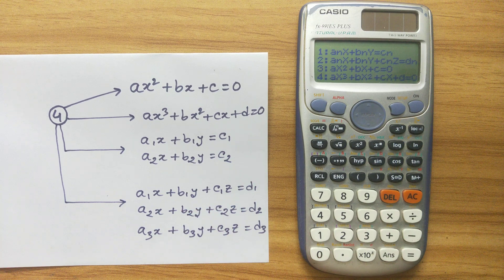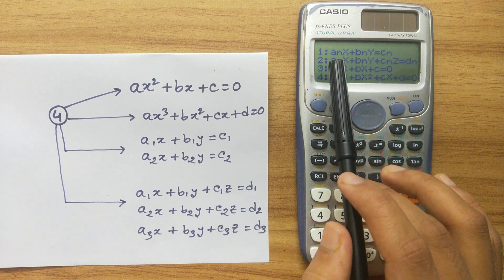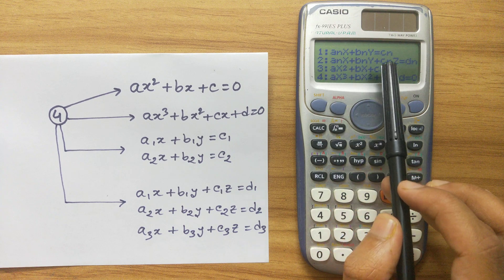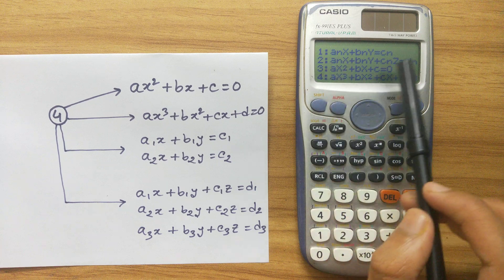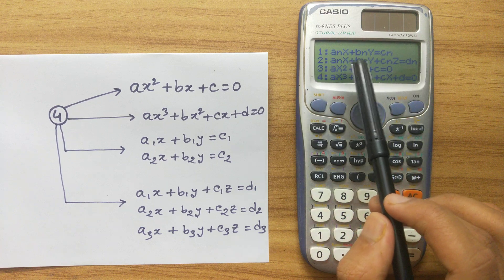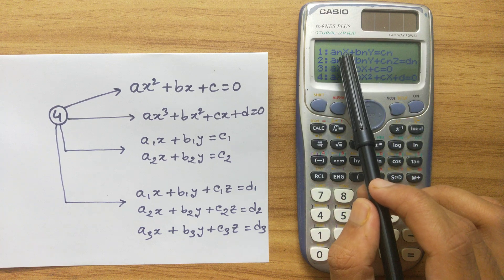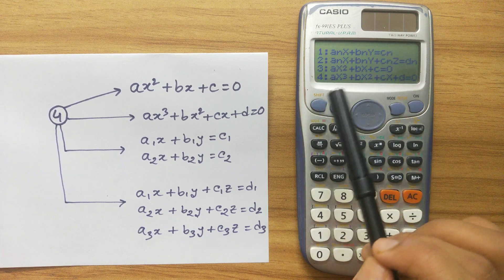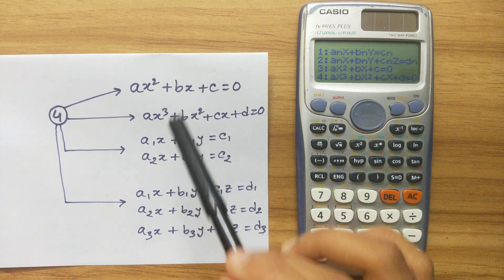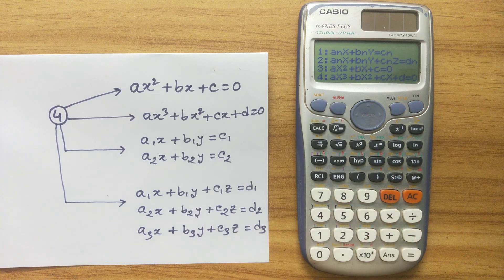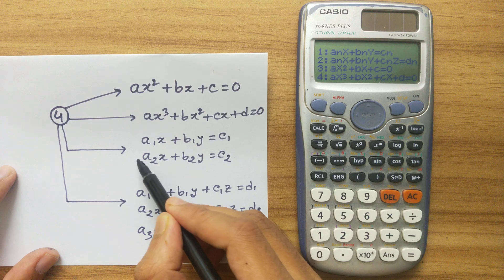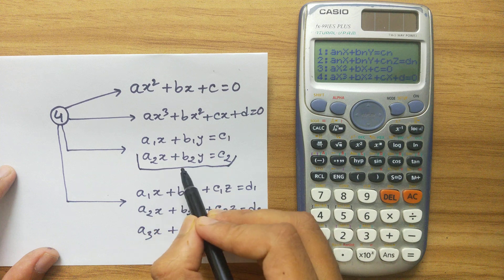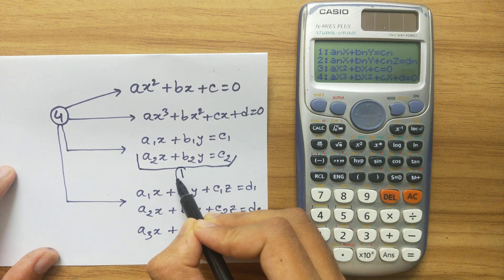The first option shown is AN times X plus BN times Y equals CN. This equation has two variables X and Y and a constant C. Comparing with our equation types, we can see this corresponds to the third type — two equations with two variables. So option 1 on the calculator is for that type.